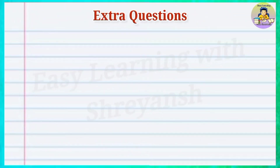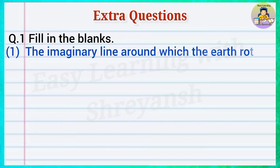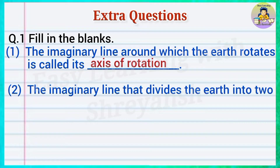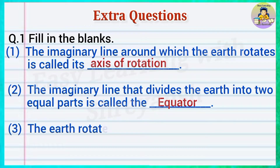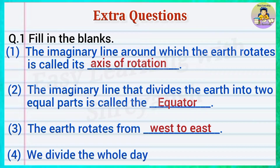Extra questions, question number one, fill in the blanks: One — the imaginary line around which the earth rotates is called its — answer: axis of rotation. Two — the imaginary line that divides the earth into two equal parts is called the — answer: equator. Three — the earth rotates from — answer: west to east. Four — we divide the whole day into — answer: 24 parts.